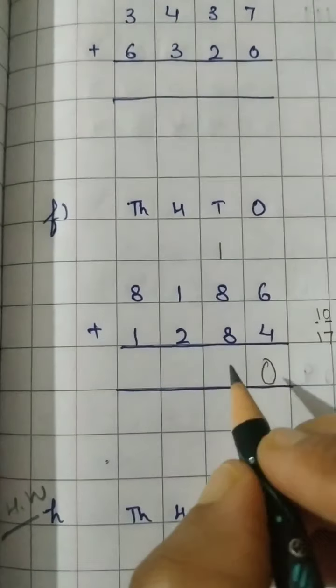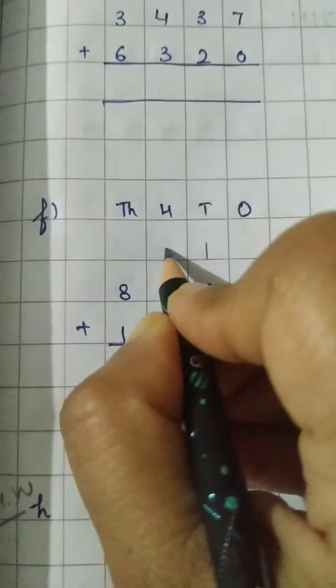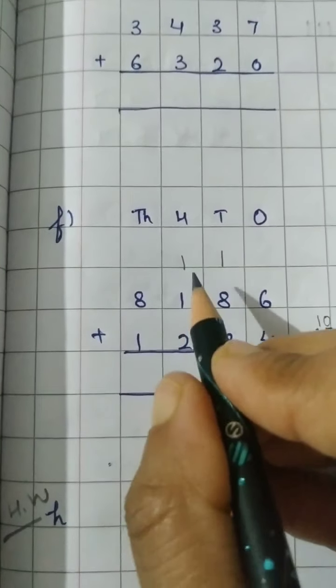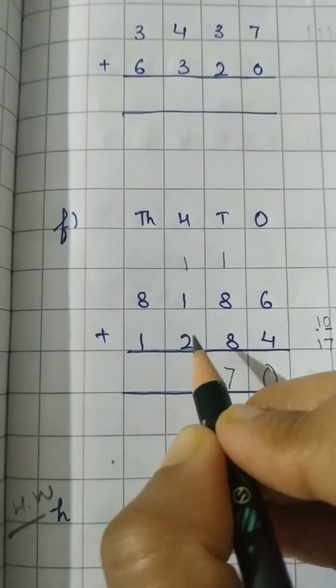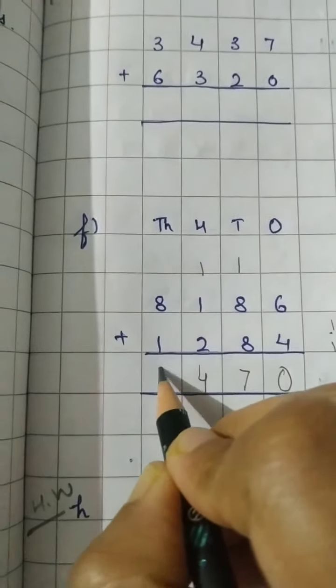Now 8 plus 8, 16 and 1, 17. You have to do it on your fingers or orally you can do. Now 7 you will write in this place and 1 will be the carry over. Now 1, 1 and 2 we have to add. What will be the answer? It will be 4. 8 plus 1, 9.